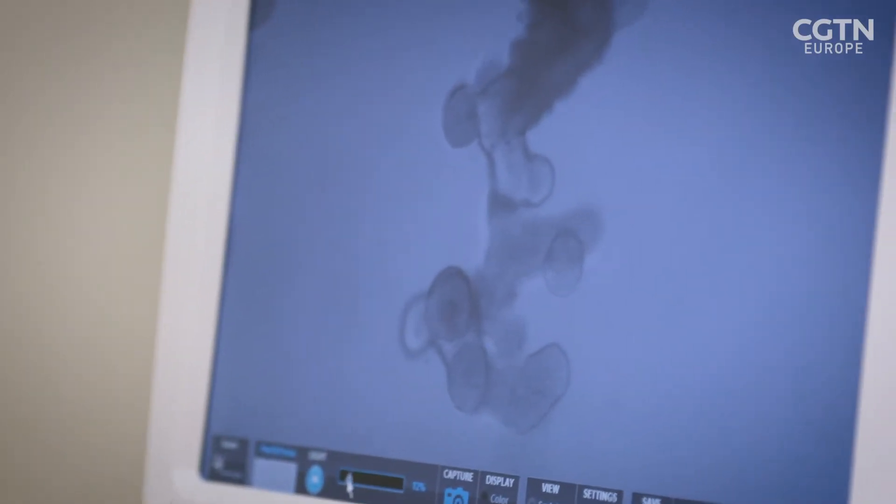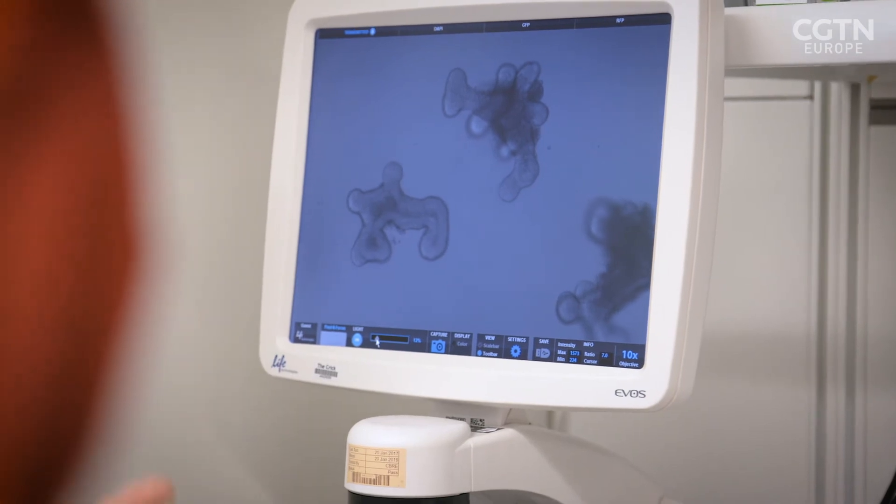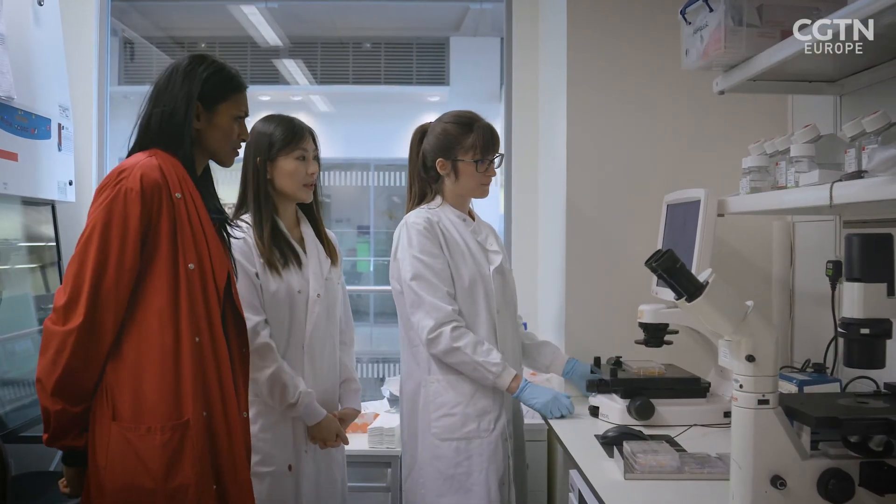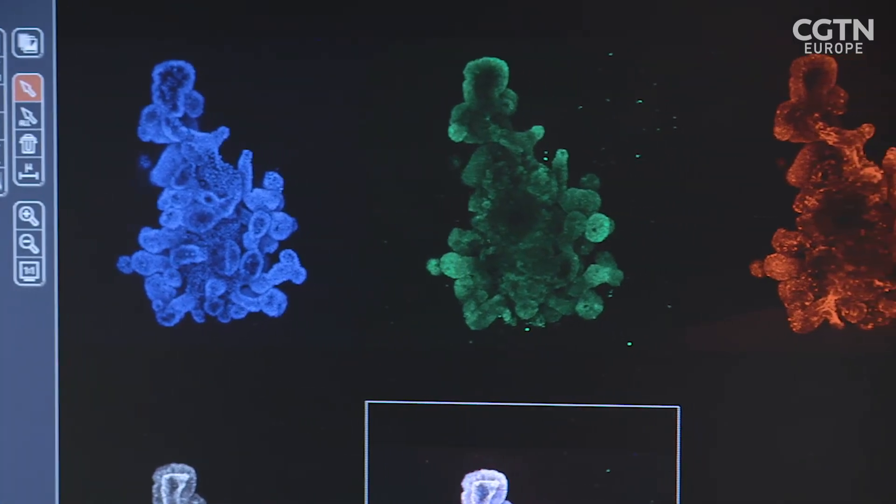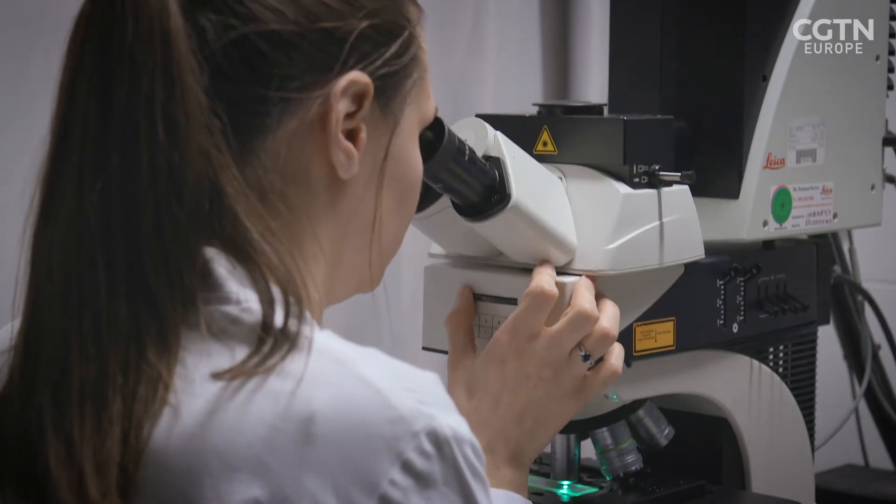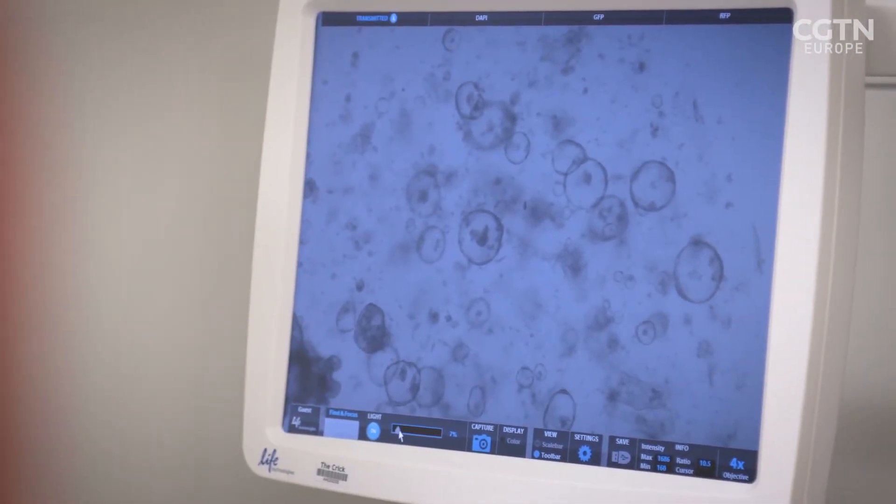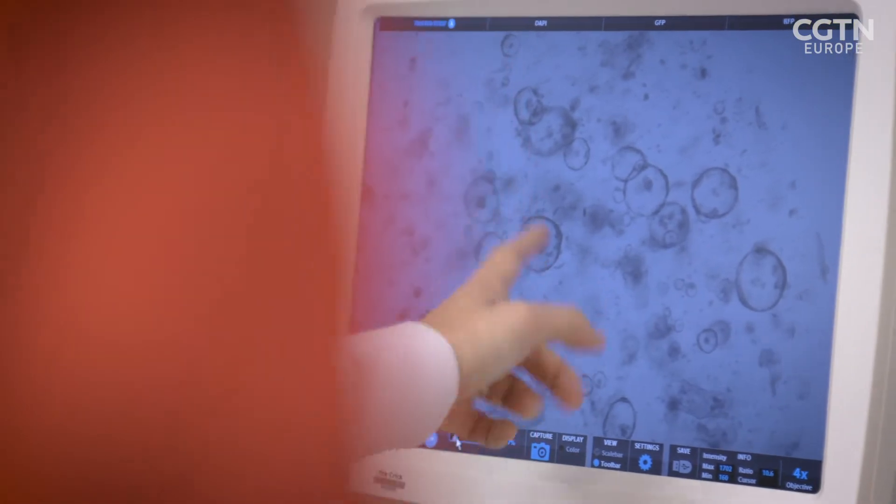Once they've grown into complete mini-organs, cancer-causing mutations can be introduced using gene editing. These disease organoids can then be used to model bowel cancer and predict drug responses. We can show one of the mouse tumor organoids, and they have the activation of the WNT pathway that we study in the lab.